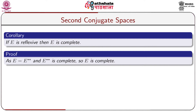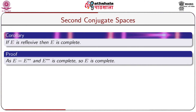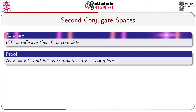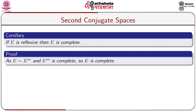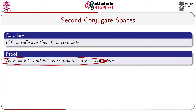In this connection, we take a corollary: if E is reflexive, then E is complete. That means if E is a normed linear space, then its first conjugate space E* is complete. If we take another dual, E** is again complete. As E is reflexive, E = E**.